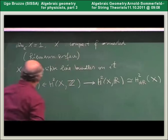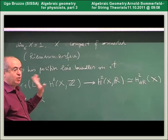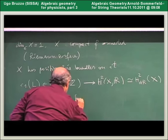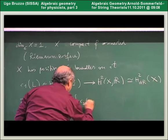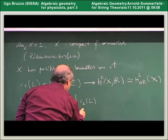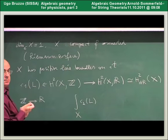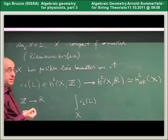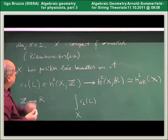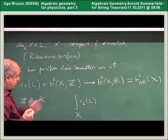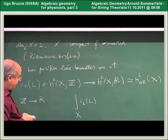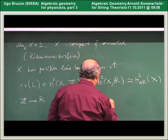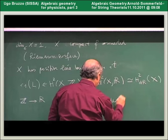So the first Chern class of a line bundle may be represented by a closed two-form. As such, it may be integrated. It's a closed two-form which we integrate over a compact manifold with no boundary. This makes good sense. This is called the degree of the line bundle.